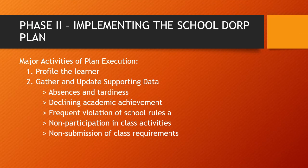Phase two — implementing the school DORP plan. There are two major activities of plan execution. Number one, profile the learners. Number two, gather and update supporting data. Under number two, we have: absences and tardiness, declining academic achievement, frequent violation of school rules, non-participation in class activities, and non-submission of class requirements.